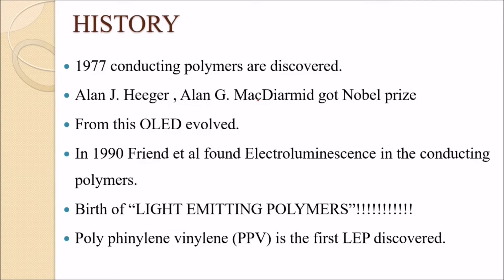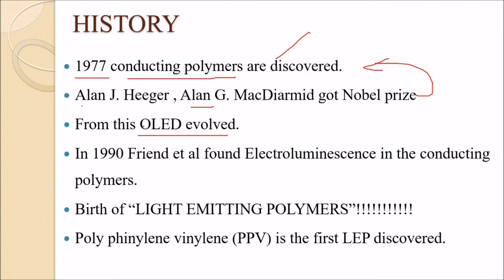In 1977, conducting polymers were discovered, creating a path for modern display technology. Alan Heeger, Alan MacDiarmid, and Hideki Shirakawa received the Nobel Prize for this discovery. From this emerged OLED and AMOLED — light emitting devices now extensively used in mobile displays.